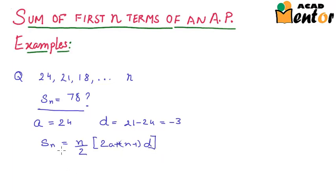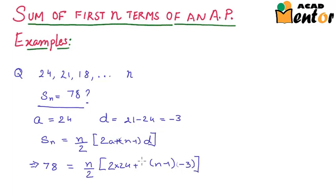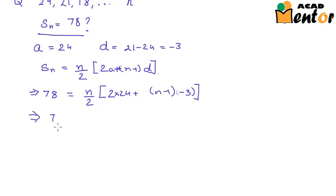Now substituting the values that we know, we get 78 is equal to n by 2 times 2 into 24 plus n minus 1 into minus 3. This gives us 78 is equal to n by 2 into 48 minus 3n plus 3 or 78 is equal to n by 2 times 51 minus 3n.